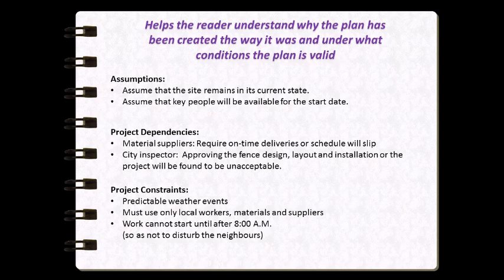The city inspector approves the fence and their final approval will determine whether the project is successful. Project constraints are factors imposed on the project that we need to accommodate within our planning process. For example, weather can be a constraint — ground frost in Canada between December and March makes backyard construction very difficult. Unpredictable weather such as storms would be considered a project risk, handled under the risk section. Other constraints might include the client requiring only local workers, materials, or suppliers, or the homeowner not wishing construction to begin before 8 a.m. so as not to disturb neighbors.